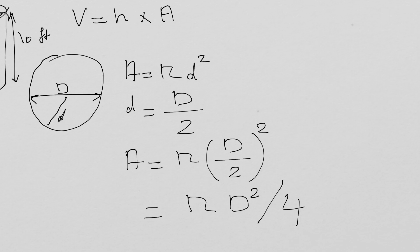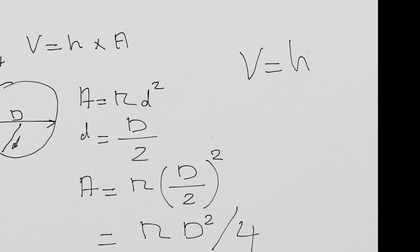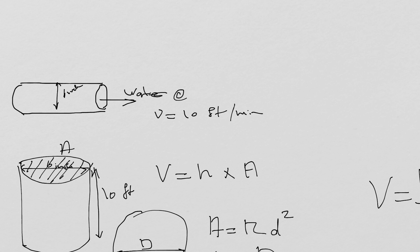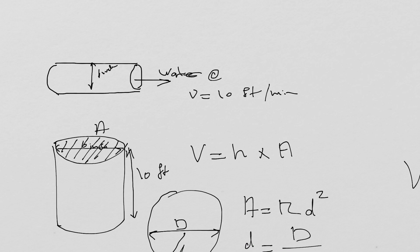It is now very easy to calculate the volume of the cylinder, which is height times pi times diameter squared divided by 4.